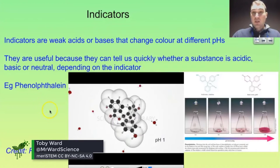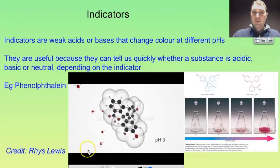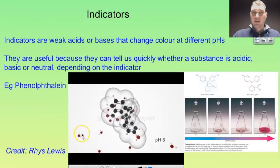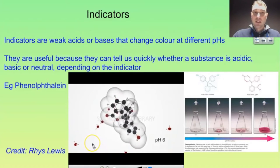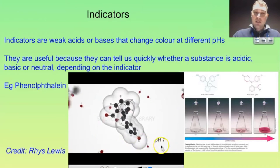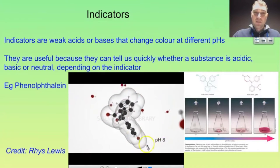Let's look at an example here with phenolphthalein — and I'd like to thank Rhys Lewis for this animation. As we play the animation, we're changing the pH. We can see hydronium ions there; water in low pHs is turned into hydronium ions because of the hydrogen ions. As the pH increases, we turn over to hydroxide ions being present in the water.